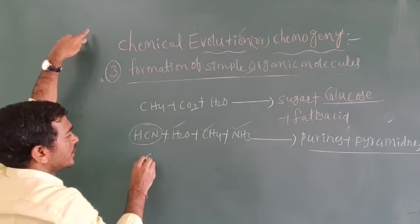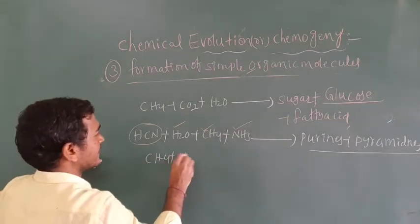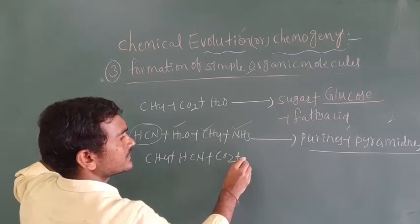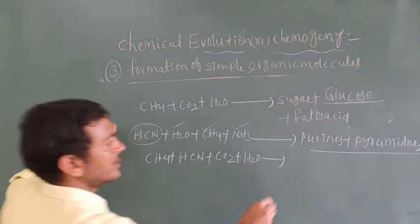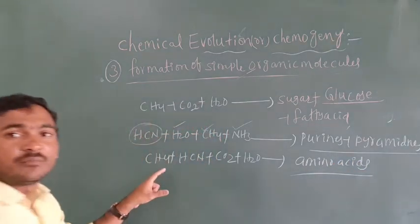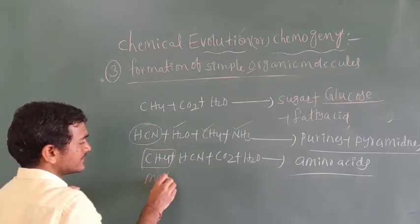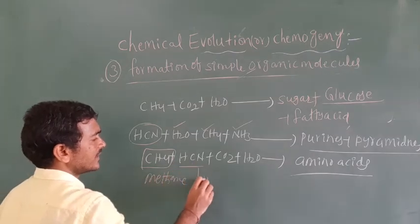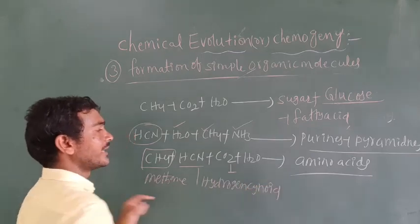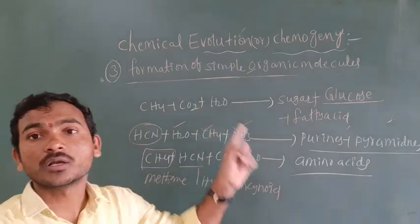Ammonia plus hydrogen cyanide (HCN) plus CO₂ plus H₂O together form amino acids. So methane, hydrogen cyanide, carbon dioxide, and water together form amino acids. These are all the simple organic molecules.